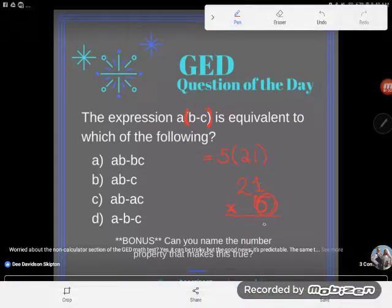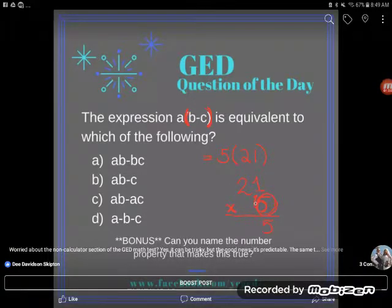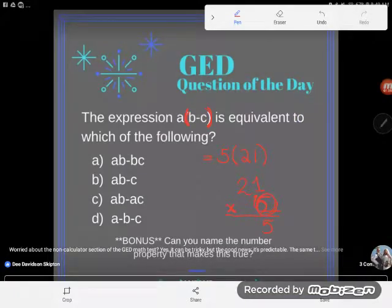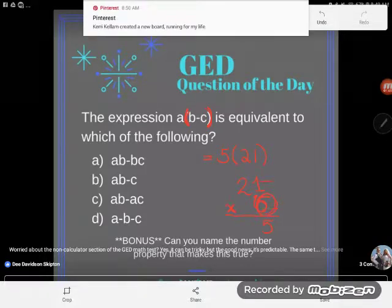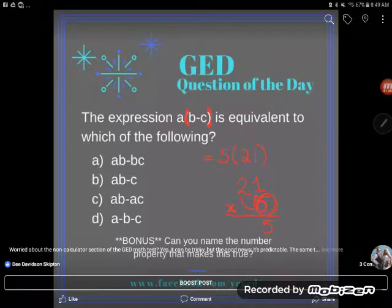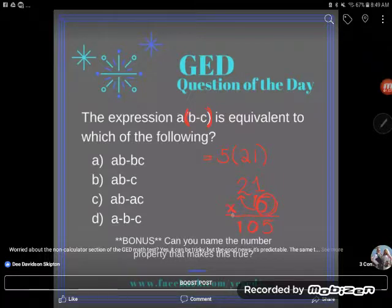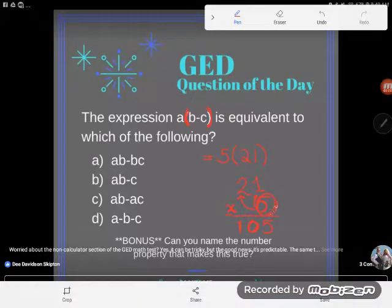First, we would multiply the 5 times the 1. 5 times 1 is 5. Then, once we were done multiplying this 5 times this 1, we would pass this 5 out to the next number. And we would multiply this 5 times the 20, or the 2 that's in the tens place is really worth 20. 5 twenties is, of course, 100 or 10 tens. And so I end up writing that 10 right there. And so we end up passing out multiplication.